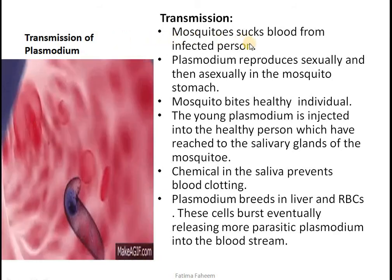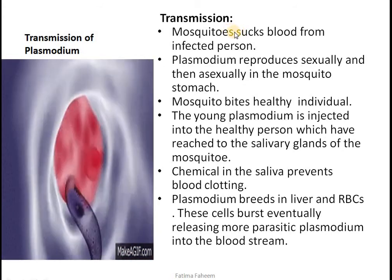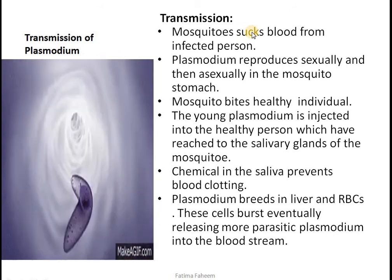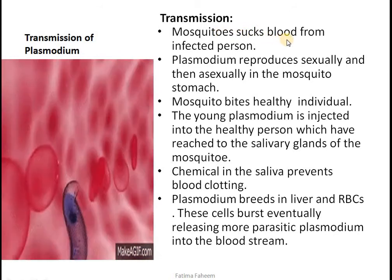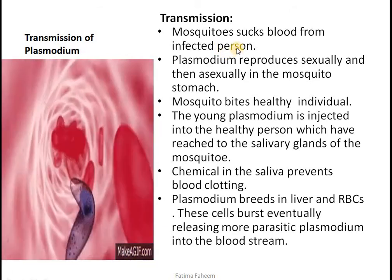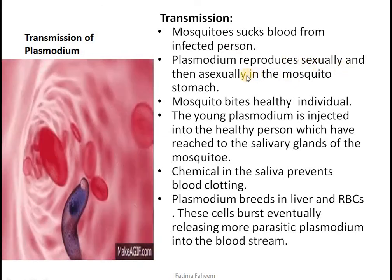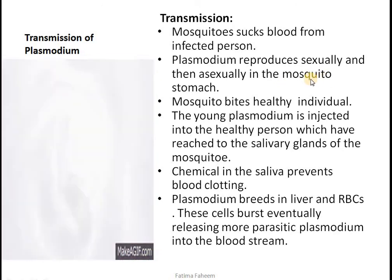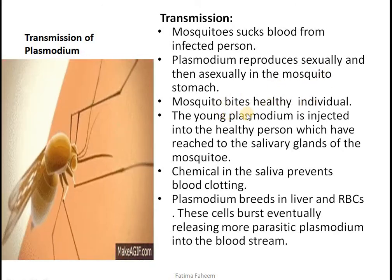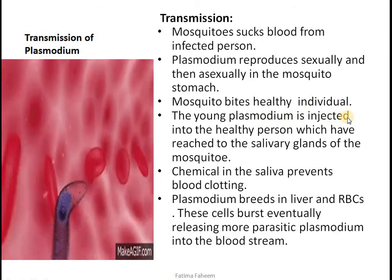Transmission of plasmodium happens when the mosquito sucks blood from an infected person. The blood is needed by the mosquito for feeding its eggs. When it sucks blood from an infected person, plasmodium enters the mosquito where it reproduces sexually and asexually in the mosquito's stomach. If the mosquito then bites a healthy person, young plasmodium are injected along with the saliva into the healthy person.